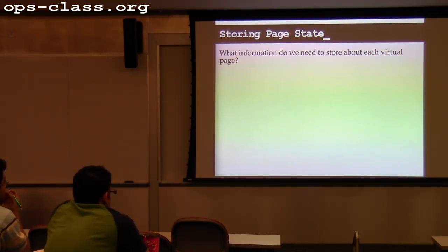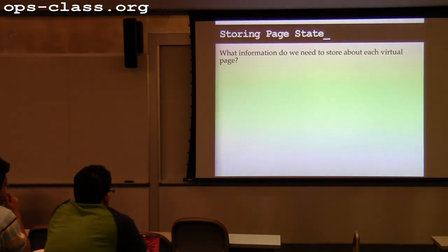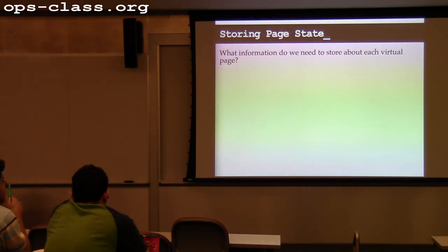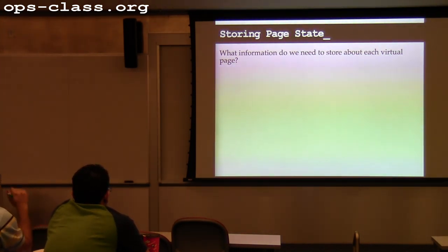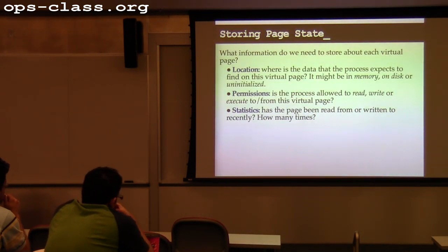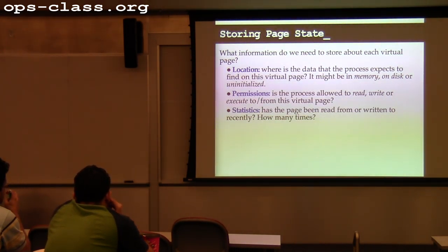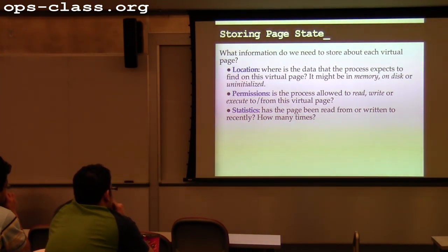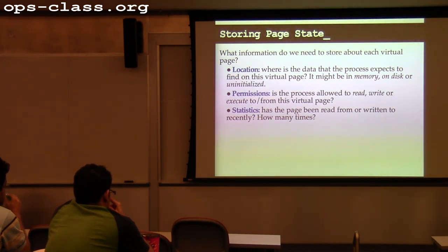We need permissions, and we need location — which could be in memory or on disk. I need to be able to find the page contents. I also need to know the process ID, though it isn't necessarily stored in the page table entry itself. I can also keep statistics about how many times the page has been used.